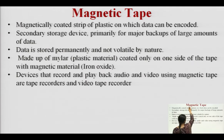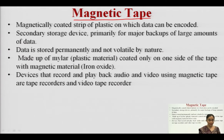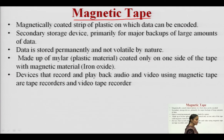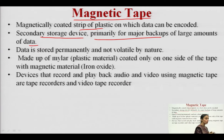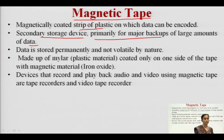Starting with the first auxiliary device: magnetic tape. Magnetic tape is a magnetically coated strip of plastic on which data can be encoded and stored. It is a kind of secondary storage device, primarily used for taking backups of large amounts of data. The data or programs stored are in a non-volatile manner — the data is stored permanently and will not be deleted.